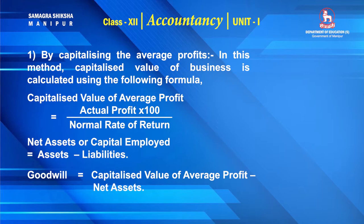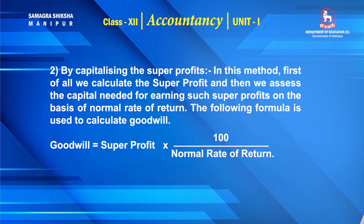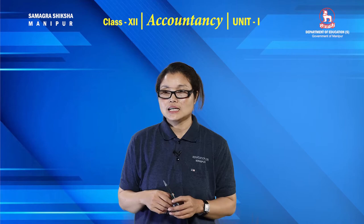The second sub-method of capitalization is by capitalizing super profit. The formula for goodwill by capitalizing super profit is: goodwill equals super profit into 100 by normal rate of return. These are the theoretical aspects of all three methods — average profit method, super profit method, and capitalization method. Now let's apply these with examples.